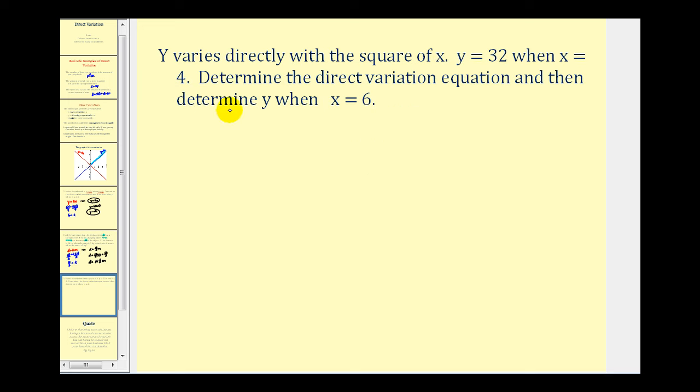Sometimes the equation will change slightly. What I mean by that is here we're given that Y varies directly with the square of X. So it's not just Y equals KX. In this problem, it's Y equals K times the square of X or X squared. And from here, it'll be pretty much the same. We're given that Y equals 32 when X is 4. We want to determine the direct variation equation and then determine Y when X is 6.